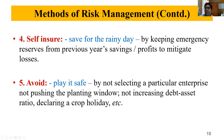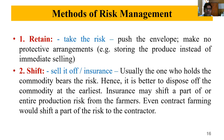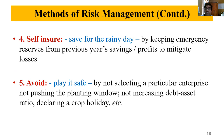The fifth method is 'avoid' — play it safe, do nothing. Doing nothing is also a decision in farm management. If the farmer decides not to do anything, that is also a decision. By not selecting any particular enterprise, not going for an extended planting window after July or August, declaring a crop holiday for the season, or by not increasing the debt-asset ratio — the farmer can let his net worth increase, not increase liabilities. So the five risk management methods are: retain, shift, reduce, self-insure, and avoid.